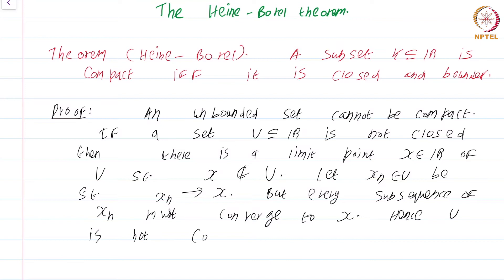Hence, U is not compact. The definition of compactness is that every sequence in that set has a subsequence that converges to a point in that set. I have considered a point outside that set and found a sequence that converges to that point. No subsequence therefore can converge to a point inside that set. So the definition of compactness is violated.